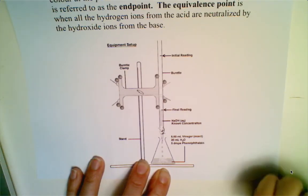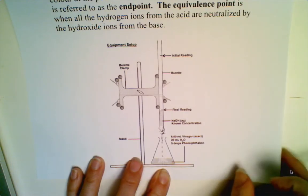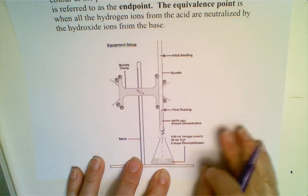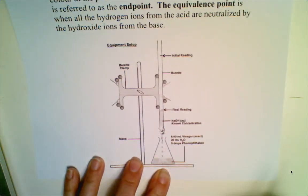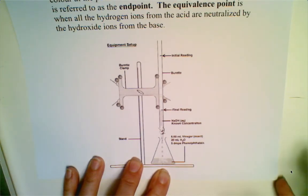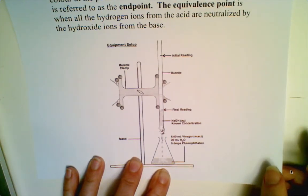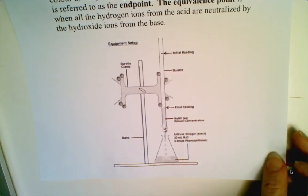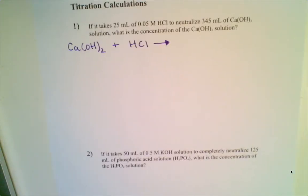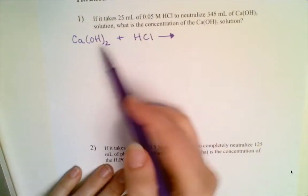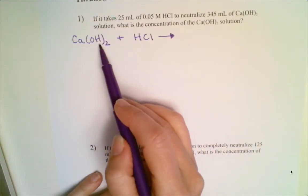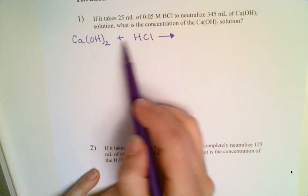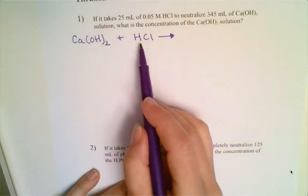Let's see how some titration calculations work. You can also watch a video on how to carry out a titration to see visually what that looks like. Our first calculation involves calcium hydroxide being titrated with hydrochloric acid.